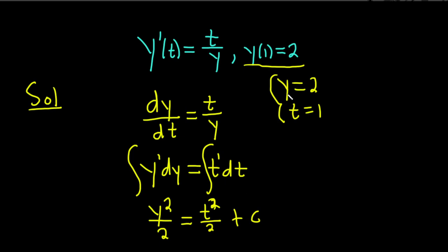So we're going to plug those numbers into this equation and solve for the value of c. So instead of y, we have 2. So it's 2 squared over 2 equals, and t is 1, so this is 1 squared over 2. And then we have our constant capital C.